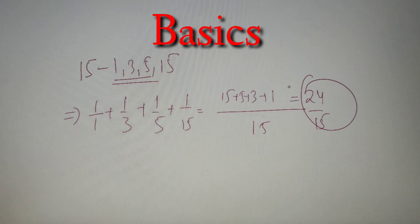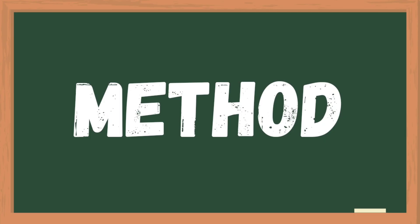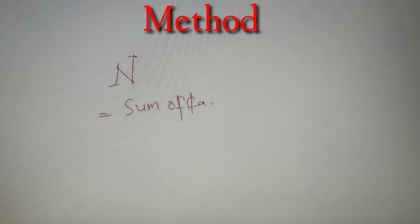If you notice, the numerator 24 is nothing but the sum of factors of the number 15, and the denominator is the number itself, 15. So the general method for finding the sum of reciprocals of all factors for any given number n is: the formula is simply the sum of factors of n divided by n itself.